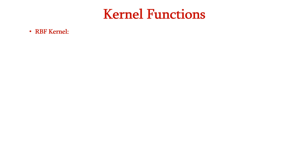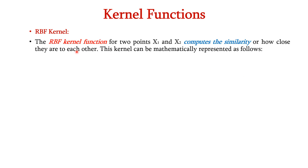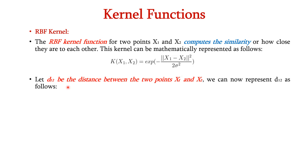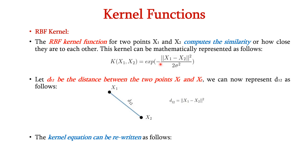The next kernel is the RBF kernel, which stands for radial basis function. The RBF kernel for two points X1 and X2 computes the similarity or how close they are to each other. It is mathematically represented as K of X1 comma X2 is equal to the exponentiation of minus the norm of X1 minus X2 whole square divided by 2 sigma square. Let D12 be the distance between X1 and X2, so D12 equals X1 minus X2 whole square. We can rewrite the equation as K of X1 comma X2 is equal to the exponentiation of minus D12 divided by 2 sigma square.